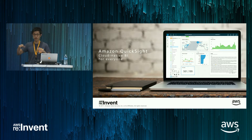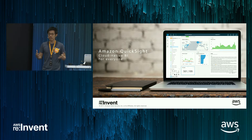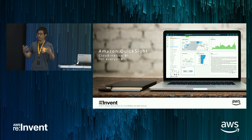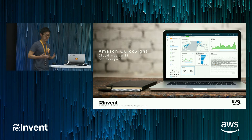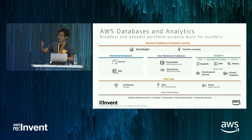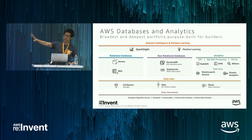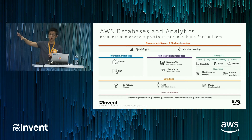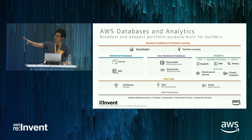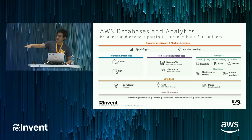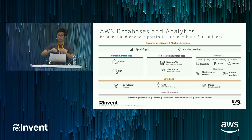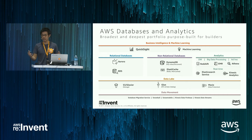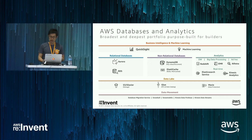Just to quickly set context, for those of you who are not familiar, QuickSight is a cloud-native BI service that we've built for AWS that allows customers to easily connect, visualize, analyze, and share their data. This is a very high-level architecture of how QuickSight fits into the overall AWS data and analytics portfolio of services. We have services to store and ingest data into AWS, create data lakes, and various services to analyze, process, and query data. QuickSight serves as our visualization and intelligence layer that allows customers to get more out of their data.